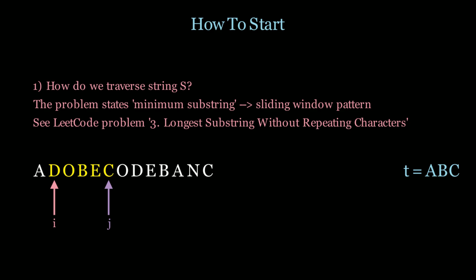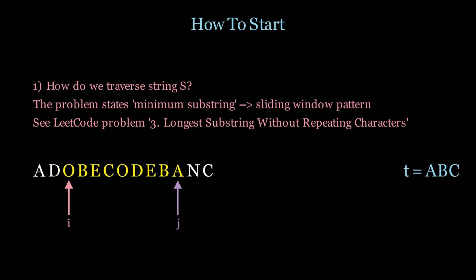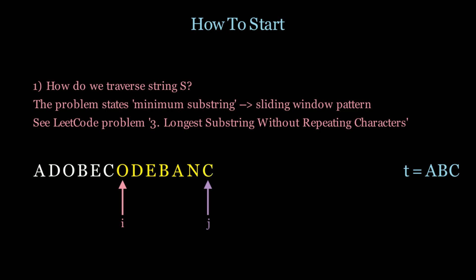Once we contain all characters, we start moving i closer to j in order to shrink the window and get a minimum substring. Once we move i, since we no longer have an a, we break the constraint, and so we have to move j again until we find an a. This is the sliding window pattern: move j as far as you can until you satisfy the problem, then move i closer to j to shrink the window and find the minimum answer.